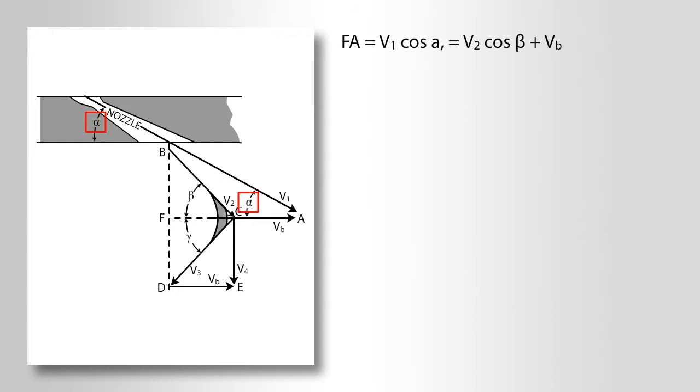Since it is only this component that does work on the blades, the steam entrance angle alpha is made as small as mechanical conditions permit. It varies between 12 degrees and 25 degrees.